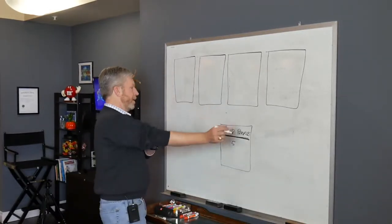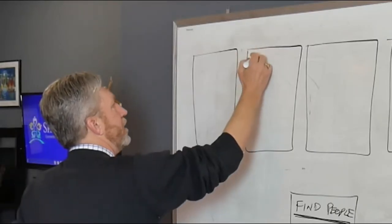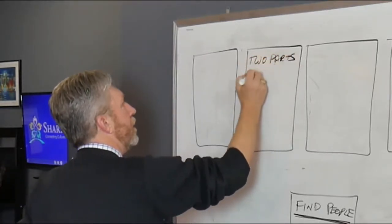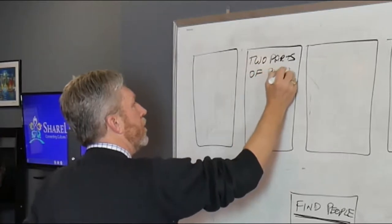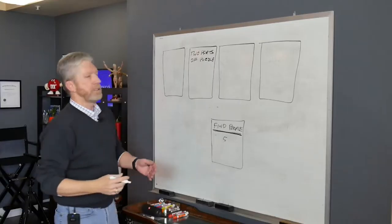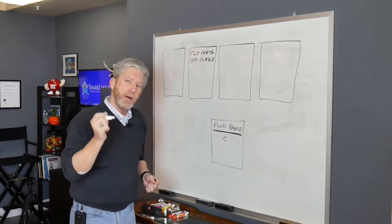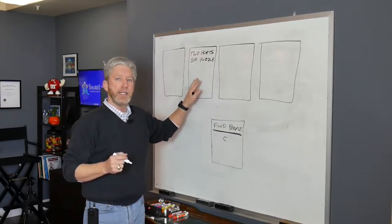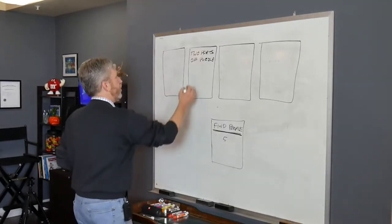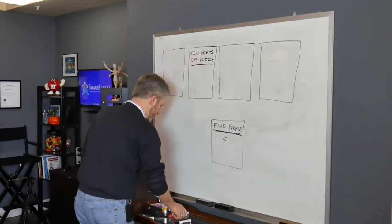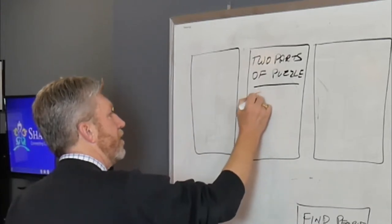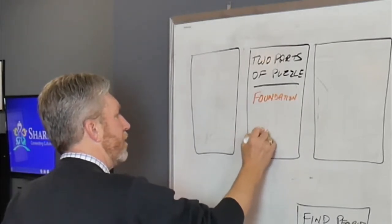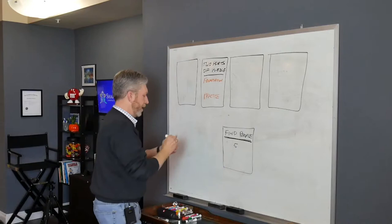Now, step number two is knowing that there are two parts of the puzzle. Two parts of the speaking Spanish puzzle. And the problem is that this stage right here is where so many people get stuck in this endless loop. So let me define this really quickly. In fact, let's use different color. So one is your foundation. And the other is practice.